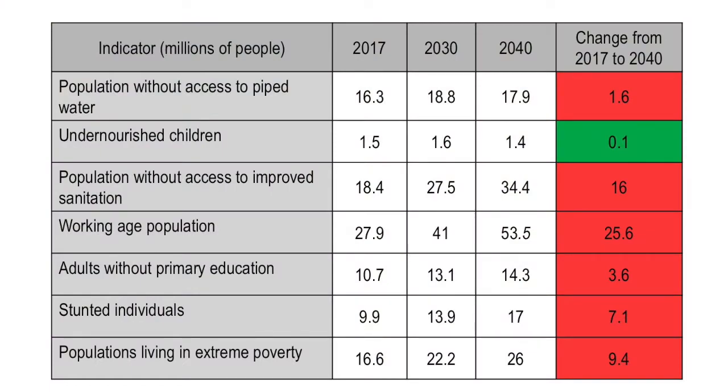This table shows the number of people in millions without access to various public services and other economic opportunities. We see an increase almost across the board in all of these measures of service delivery and economic opportunity. The working-age population in CEMAC countries will grow by about 25 million people between now and 2040, meaning governments need to find about 25 million additional jobs — just to keep the current unemployment rate where it is, which is probably in the neighborhood of 30 to 40 percent, and higher in younger populations. This could drive an increasingly fragile demographic situation towards the brink.